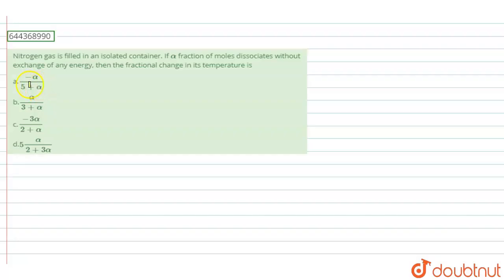In this question, it is given that nitrogen gas is filled in an isolated container. If alpha fraction of moles dissociates without exchange of any energy, then the fractional change in its temperature is what? We have to find the fractional change in temperature, and the options are A, B, C, D.